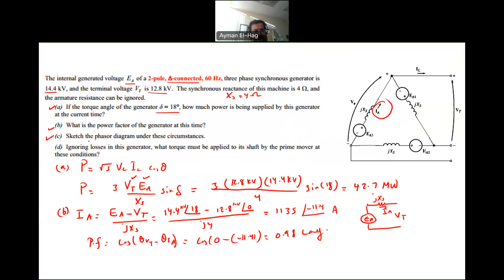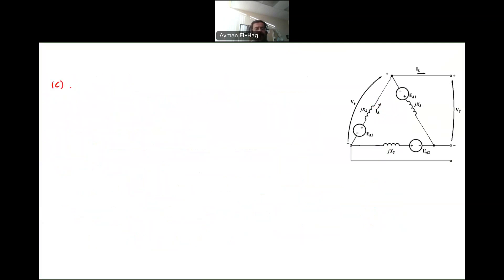Then part C: sketch the phasor diagram under these circumstances. So we want to draw the phasor diagram. How we do that? We start with your V terminal or V phase, which has an angle of 0. This is always our reference. Then we have our IA with a small angle equal to 11.4. This is your IA. So if we reflect this one here, this is your IA.